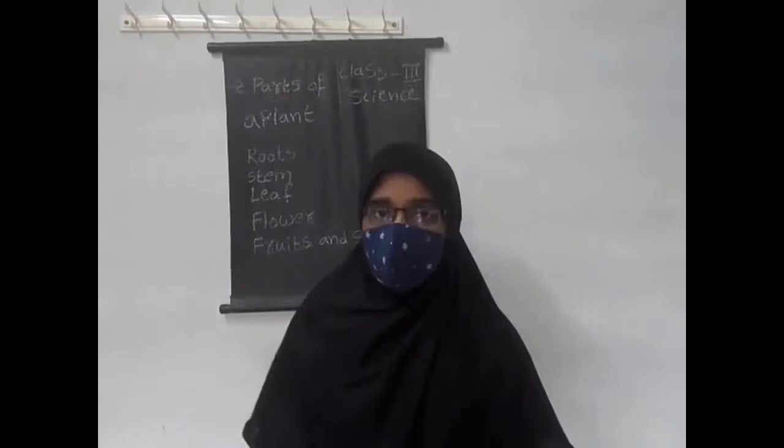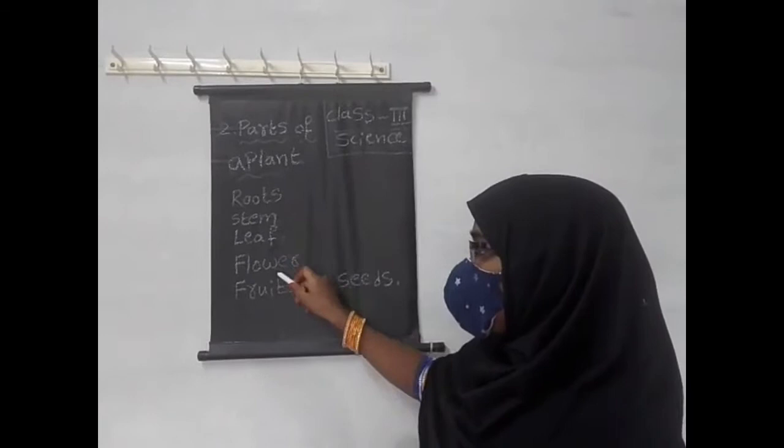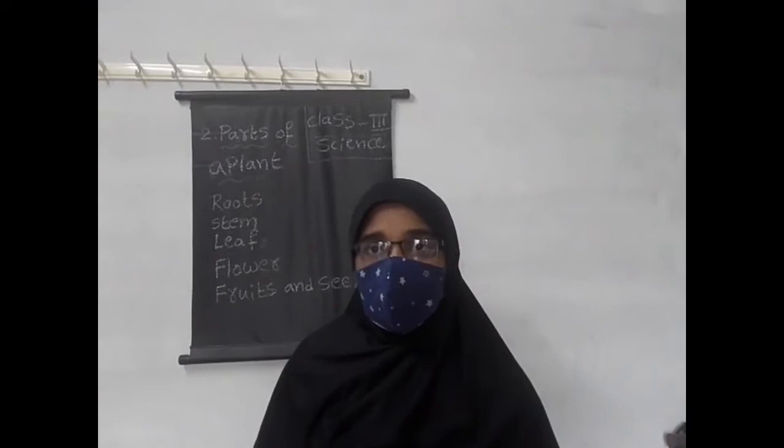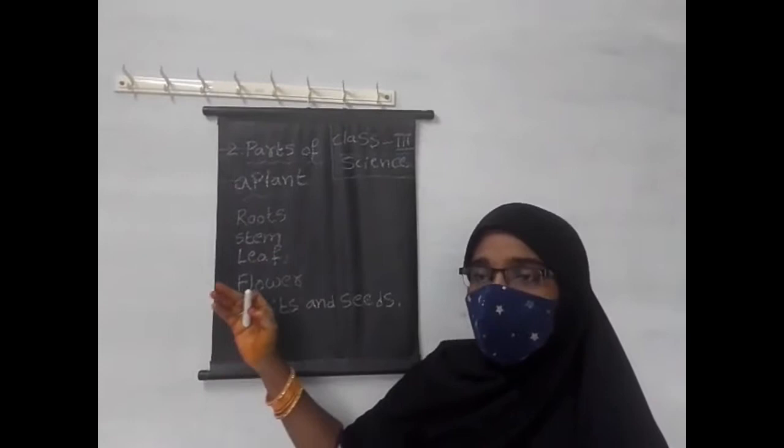How many parts does a plant actually have? These are the parts of a plant: roots, stem, leaf, flower, fruits, and seeds. Before going into our class, we have to recall our knowledge about these three parts.